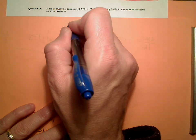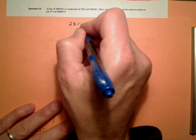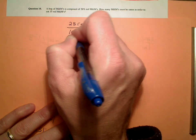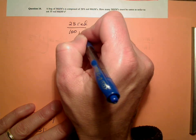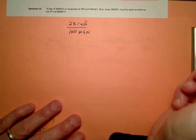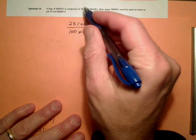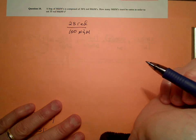So we know that we have 28 red M&M's for every 100 total M&M's. That's our conversion. That's what this 28% can be interpreted as.